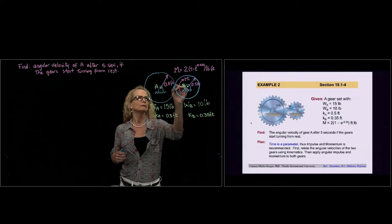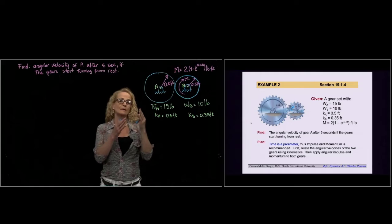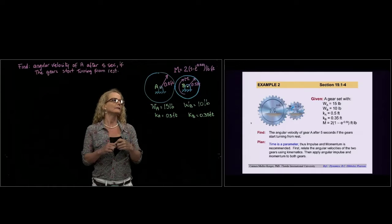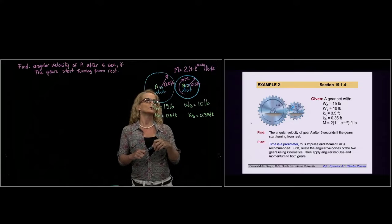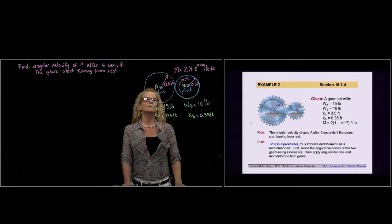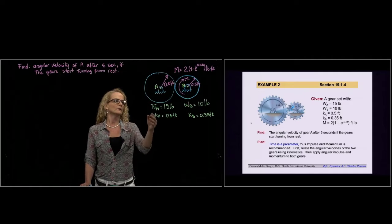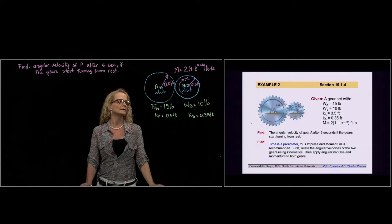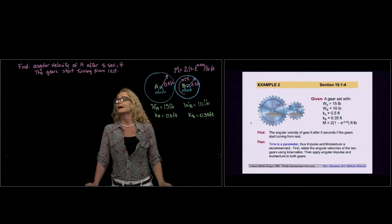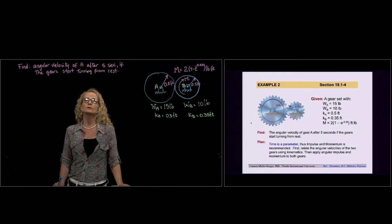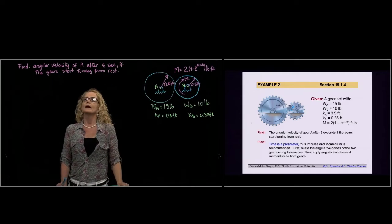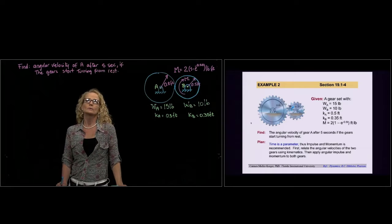They meet at this point and carry the same velocity at that point where they meet. Gear B is subjected to a moment which has this expression right here. We are given the weight of both gears and the radius of gyration of both gears. We are being asked to find the angular velocity of gear A after five seconds, and if the gears start turning from rest.